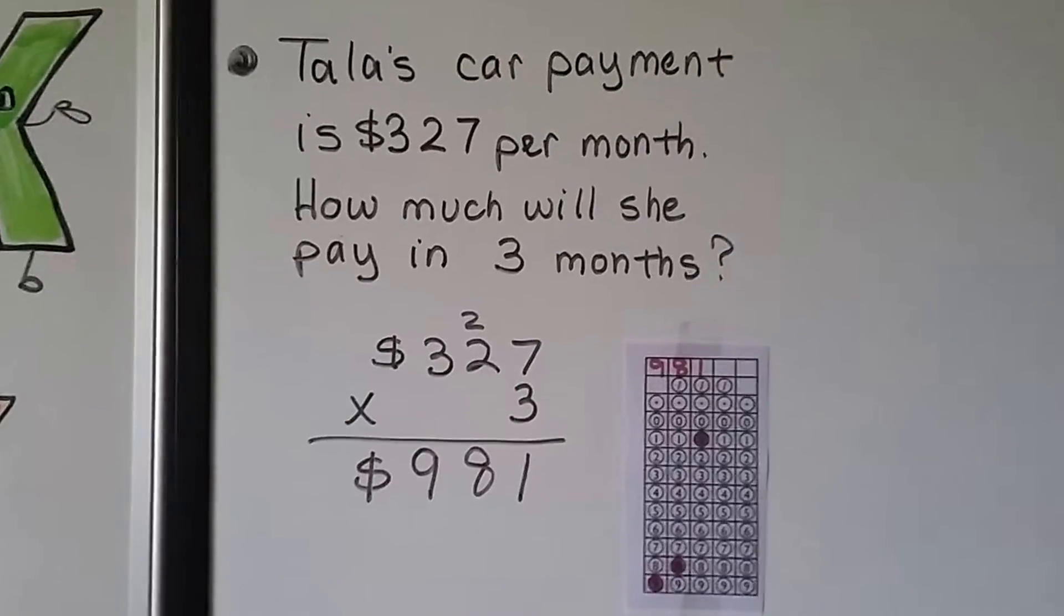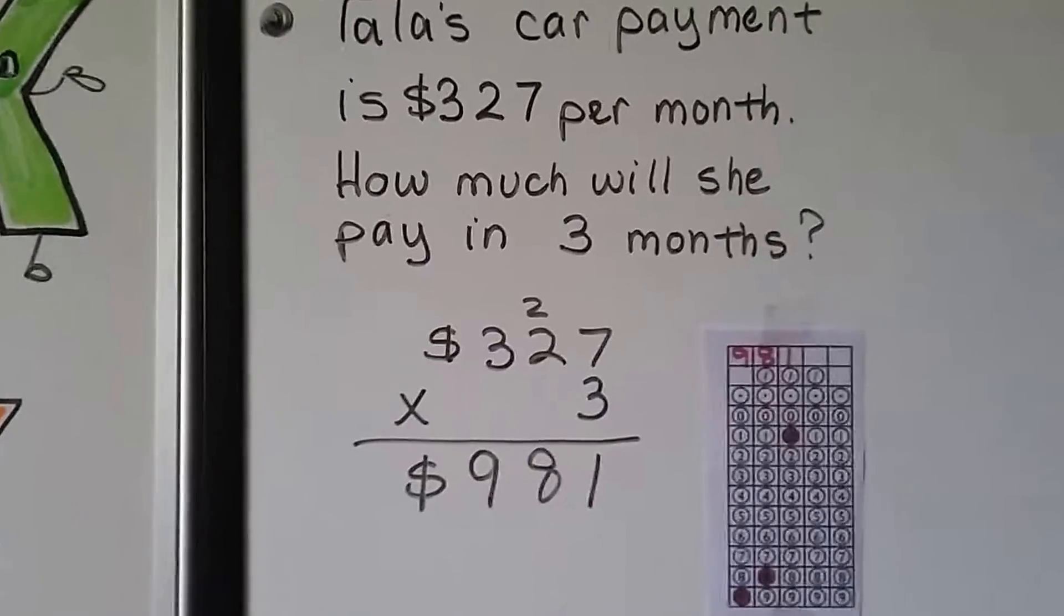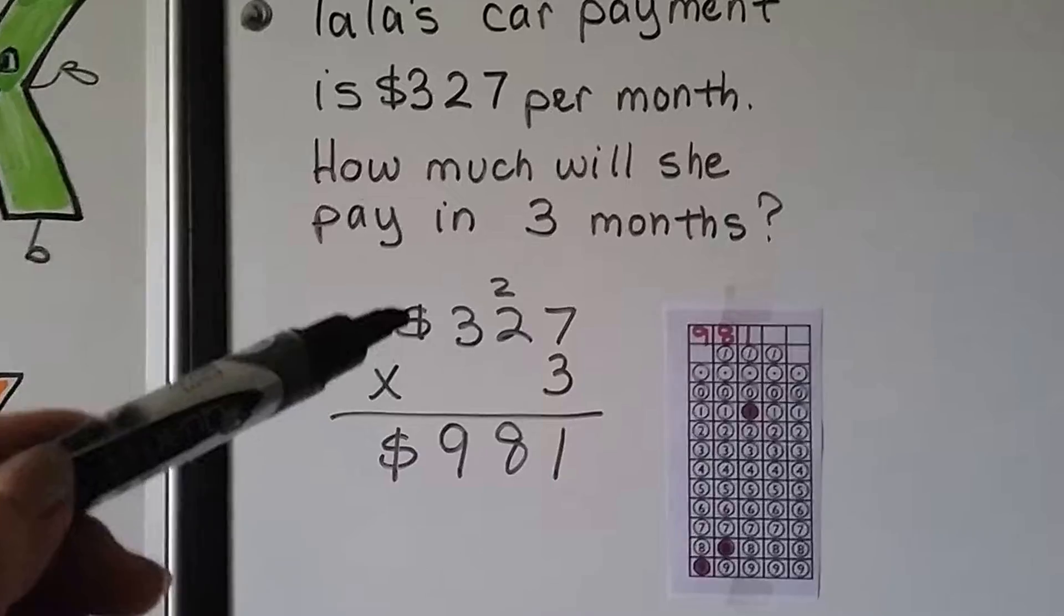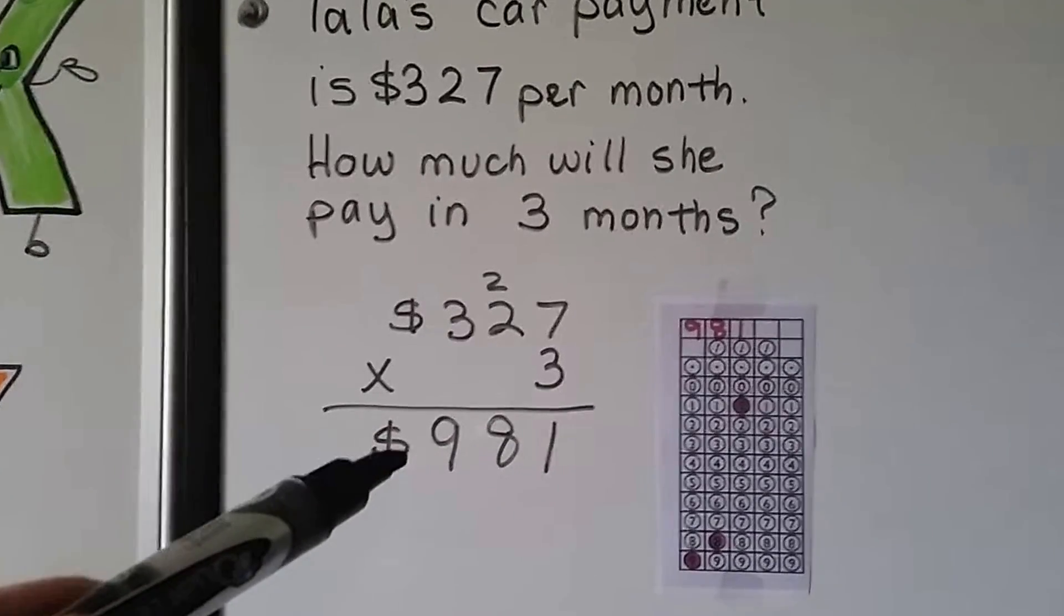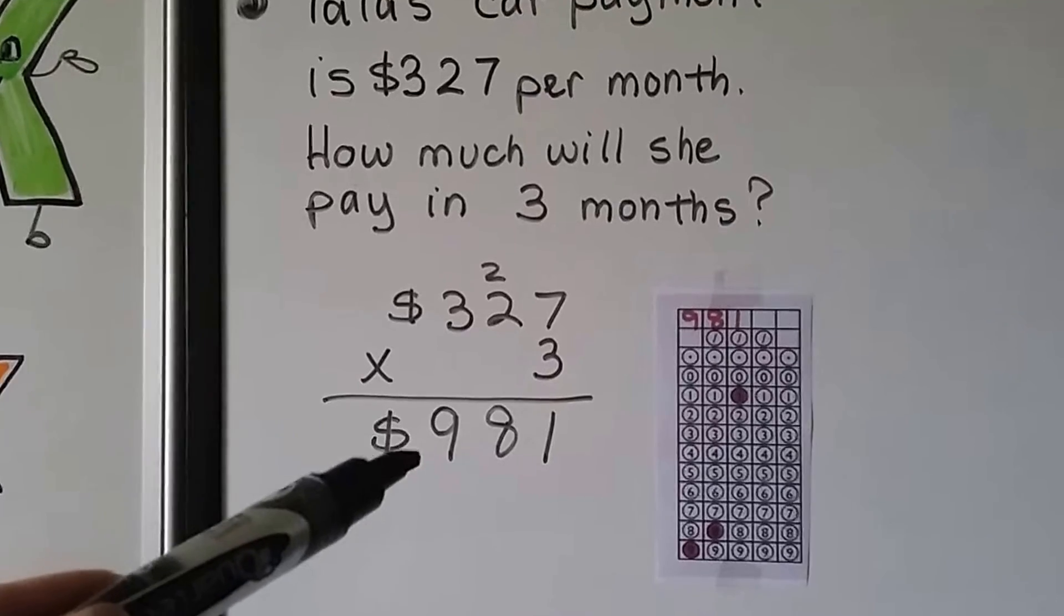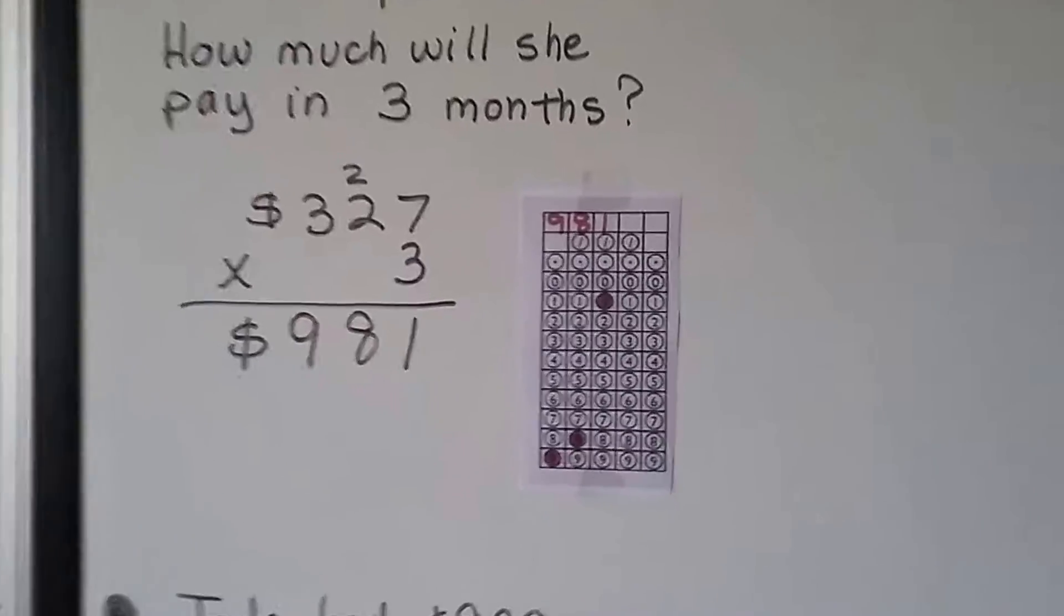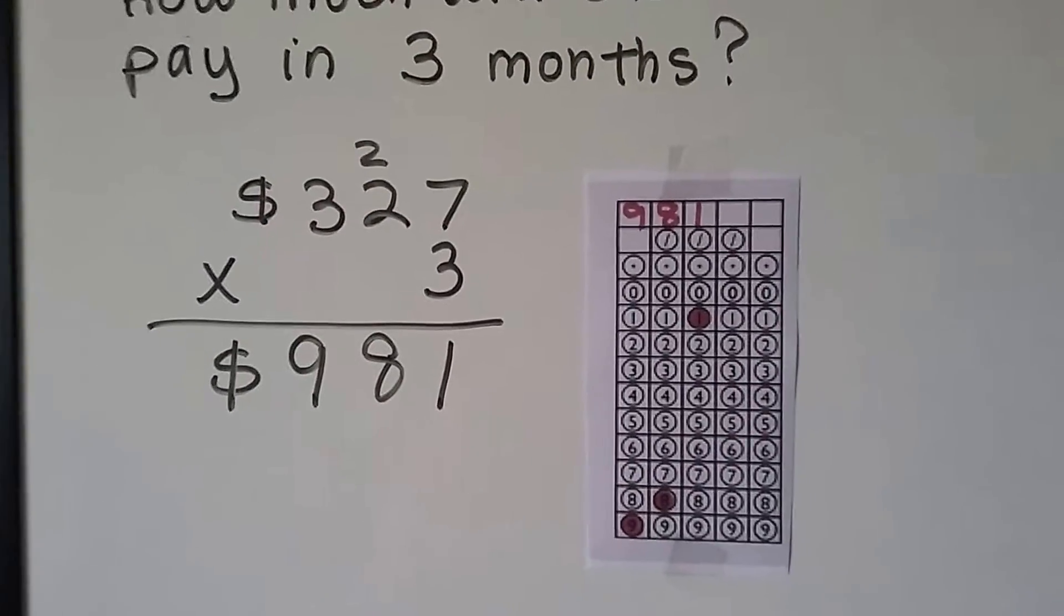Tala's car payment is $327 per month. How much will she pay in 3 months? Well, it says per month and it's 3 months. So we need to multiply 327 times 3. When we do, we're going to get a dollar amount of $981. You don't need the dollars on the answer sheet. You just put the 9, the 8, the 1, and fill in the 9, the 8, and the 1.